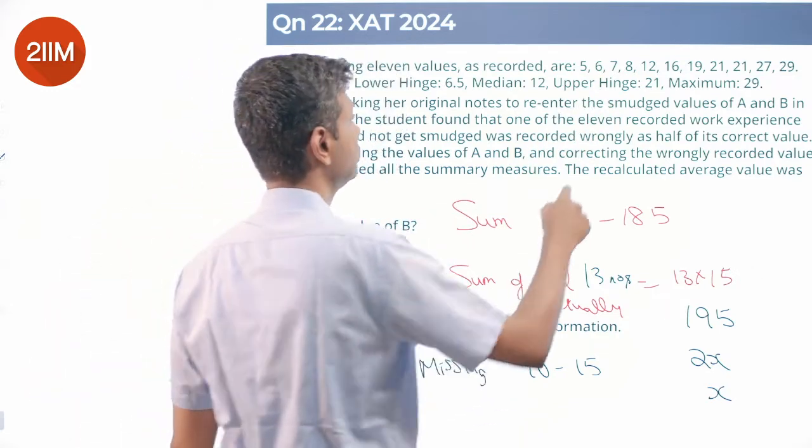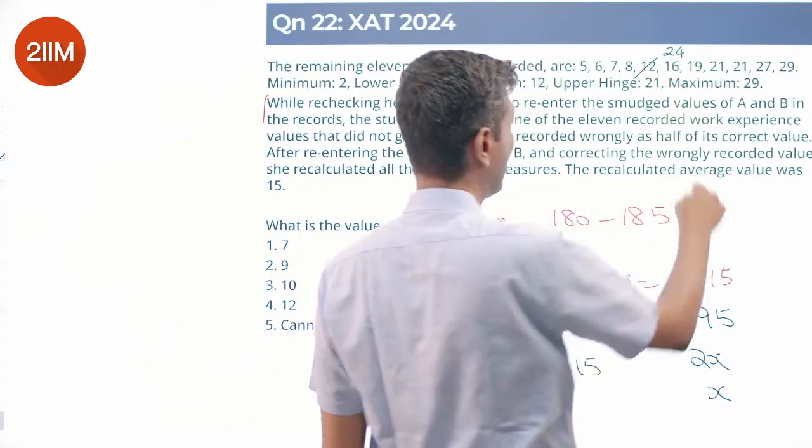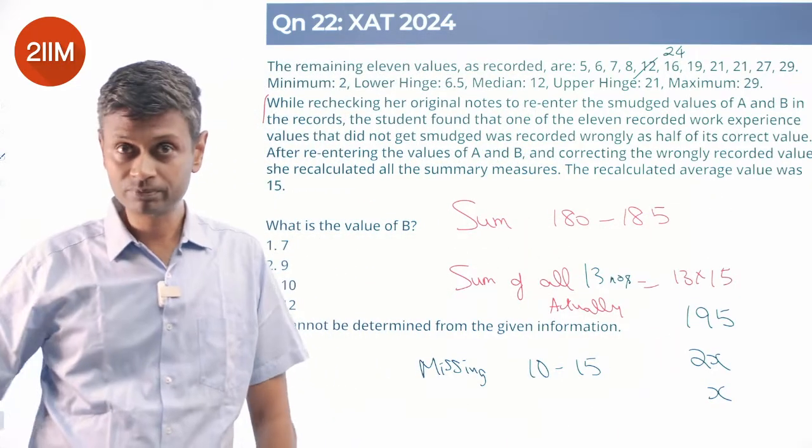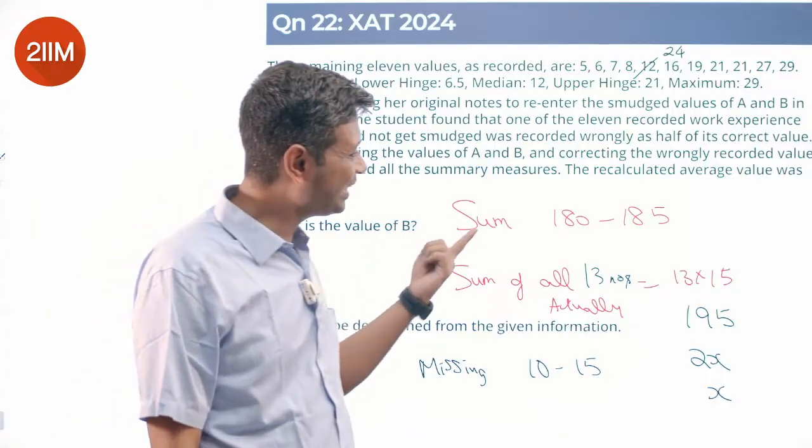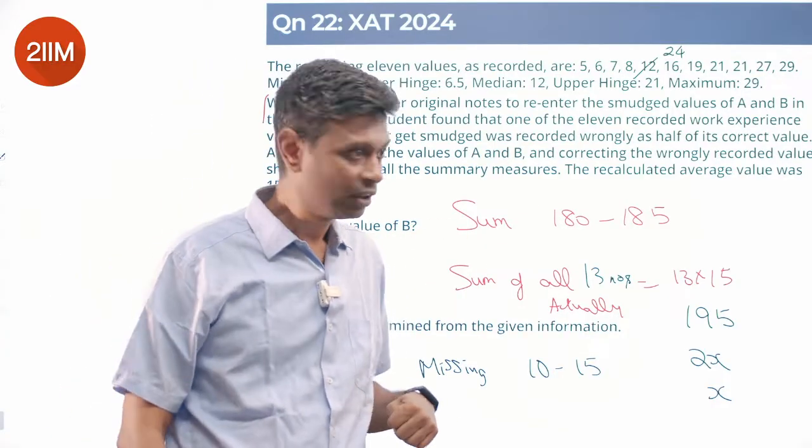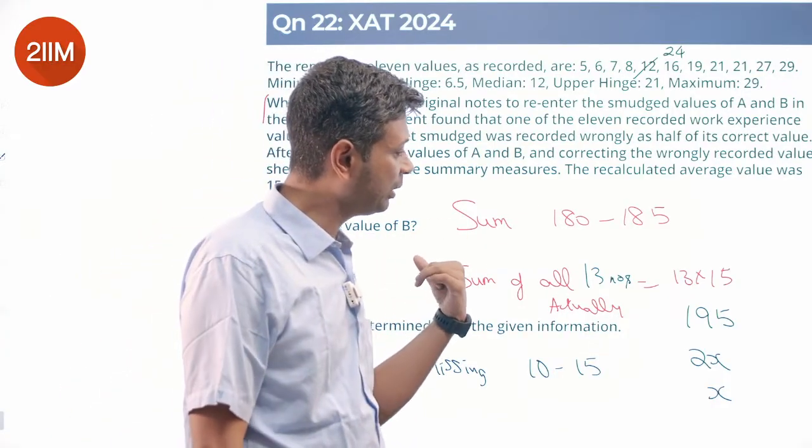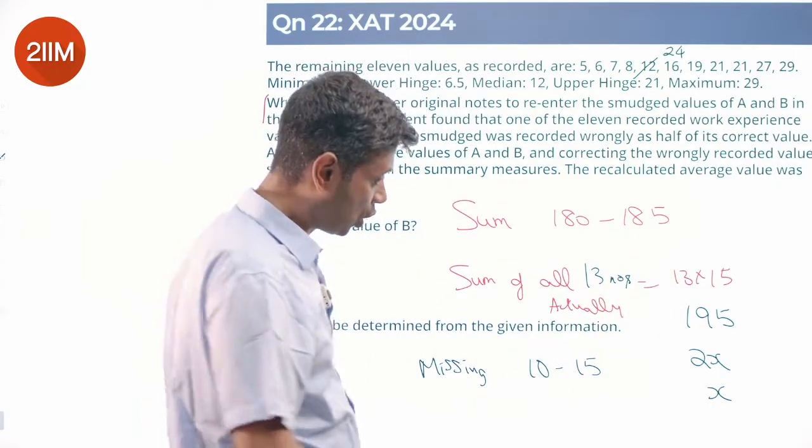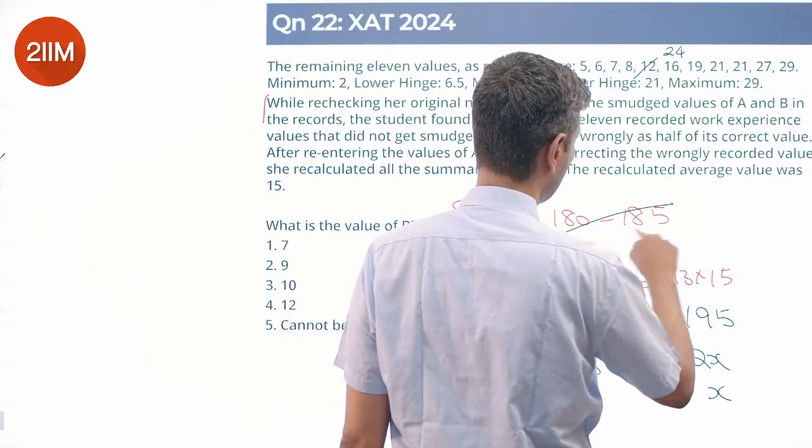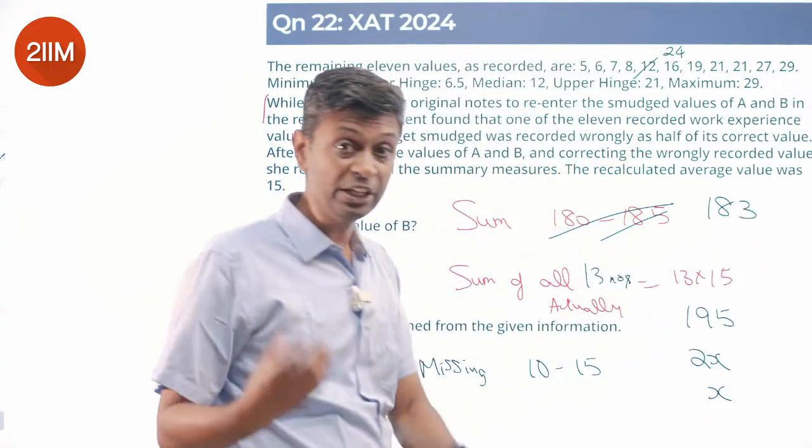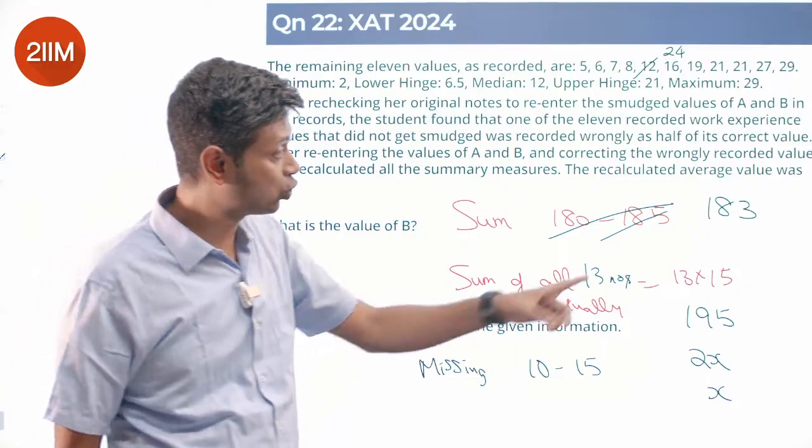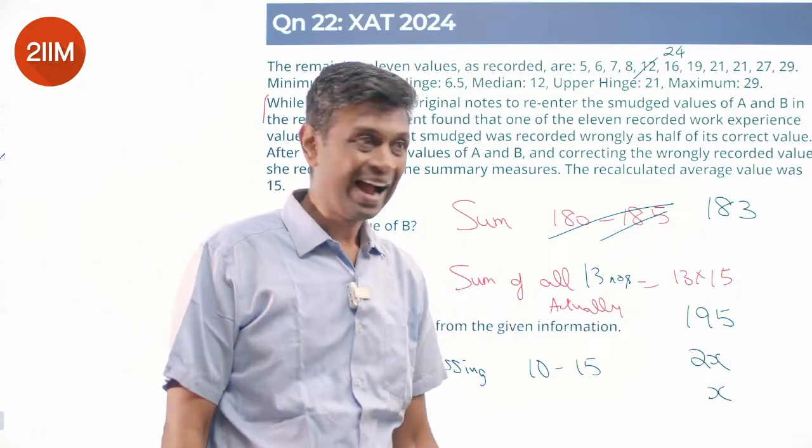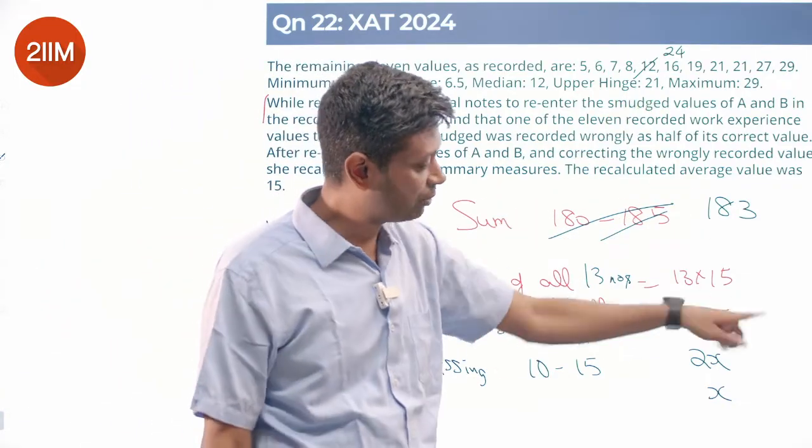We can deduce that this was actually 24 and we have written this down as 12. So the 180 to 185 should have actually become 195 because I miscalculated by 12. This number is not 180 to 185 but 183. B is such that it goes to 183, and then I missed out 12, it takes me to 195.